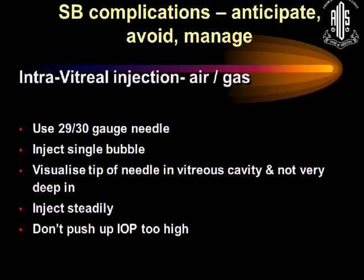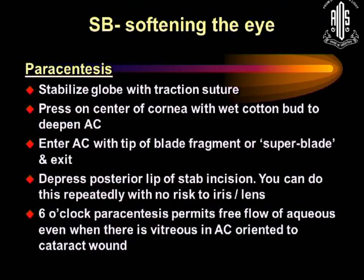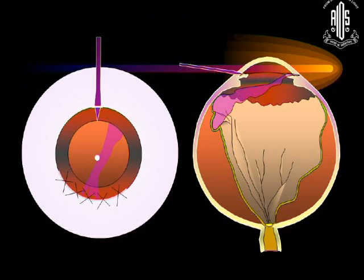For intravitreal injection, use a 29- or 30-gauge needle, inject a single bubble, visualize the tip of the needle in the vitreous cavity and not very deep, inject steadily, and don't push the intraocular pressure too high. If pressure is high, perform a paracentesis. Stabilize the globe with a traction suture, enter the AC with the tip of a 15-degree blade, and depress the posterior lip of the stab incision — this is preferred over using a needle to actively withdraw fluid. In aphakic eyes, a 6 o'clock paracentesis gives very good drainage, as vitreous in the superior part can otherwise block it.